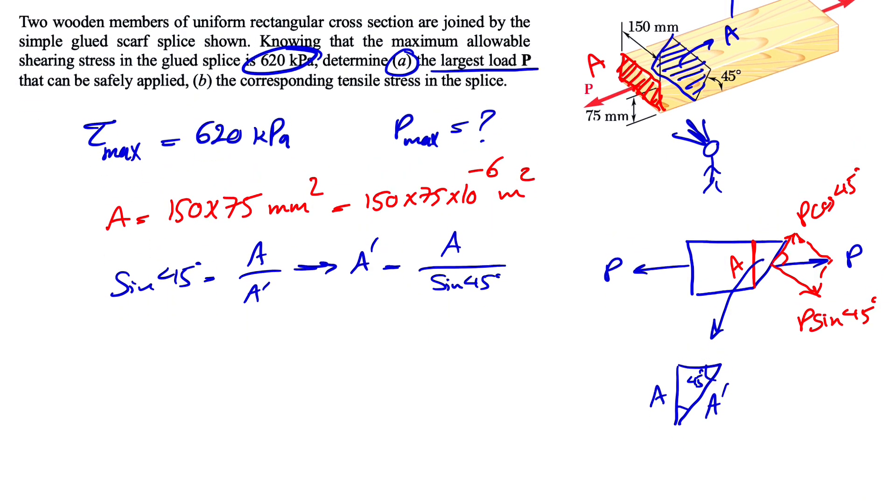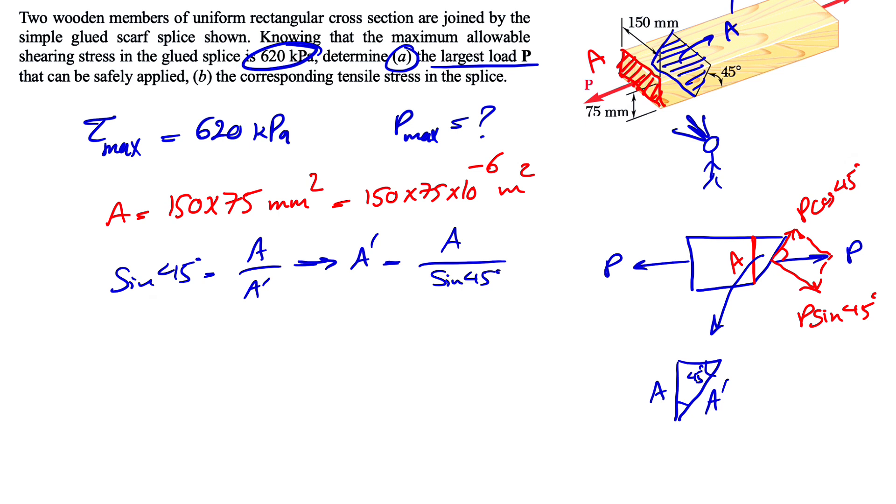So now we have everything we need for finding the maximum shearing rate. We know the maximum shearing rate is the force, which is the P cosine of 45 that we have here.